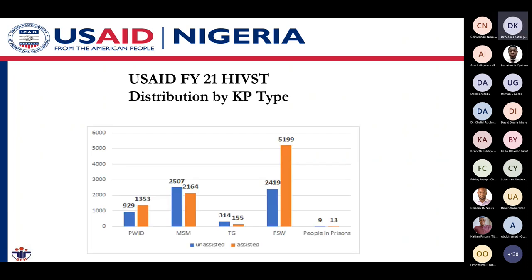We had more self-testing for female sex workers, followed by men who have sex with men. When you compare female sex workers to men who have sex with men, we had more assisted for female sex workers, as against more unassisted for MSMs, for obvious reasons.